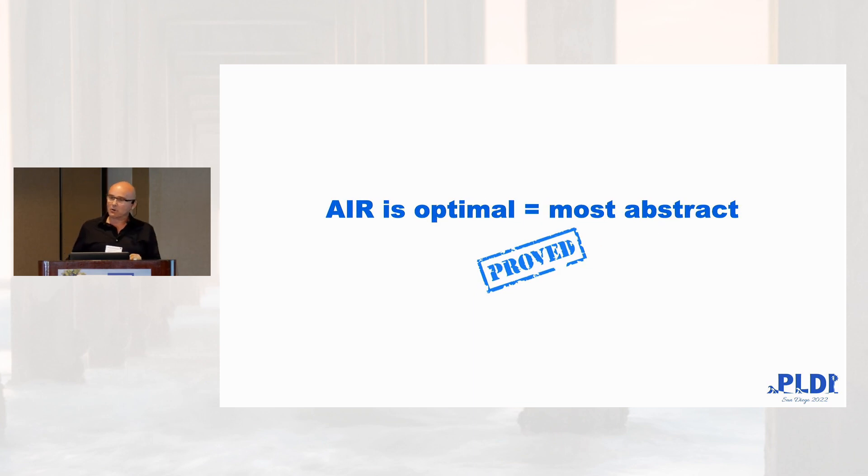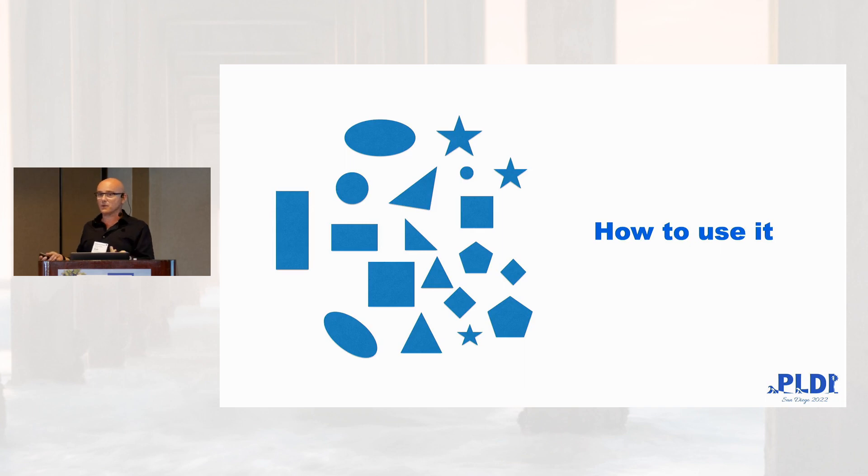Second thing that we prove is that abstract interpretation repair is optimum. That means that it's the most abstract possibility you have to prove the things and to have the most abstract domain for proving your state.